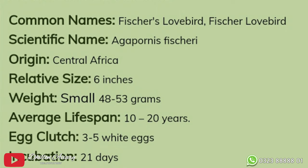There are famous species among them. The most famous species in Africa, and the most popular, is fisheries. All fisheries were known in captivity in Africa from 1957. The green fisheries — common name is fishery lovebird, scientific name is Agapornis fisheri, origin is Central Africa. Its size is approximately 6 inches. The weight is about 50 grams. Its lifespan is approximately 10 to 20 years. The egg clutch is about 4 to 6 eggs. The incubation period is 21 days.